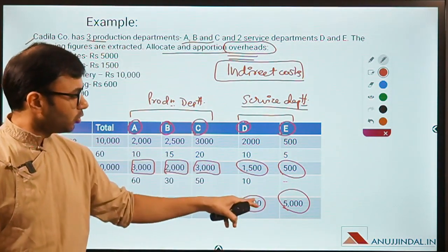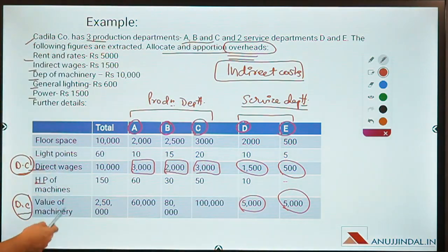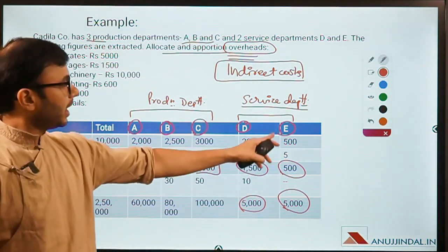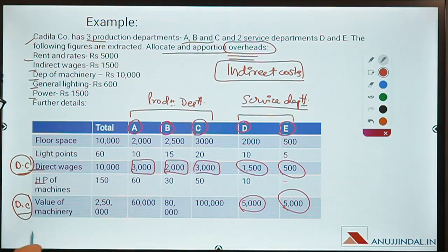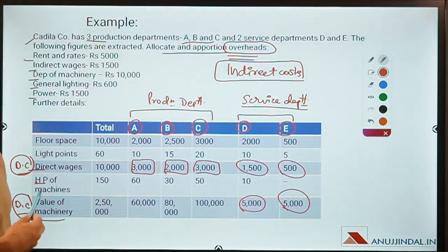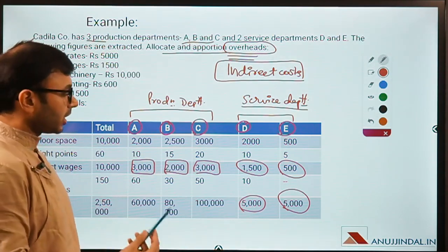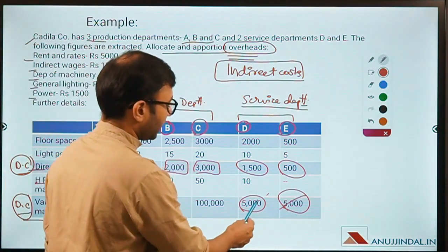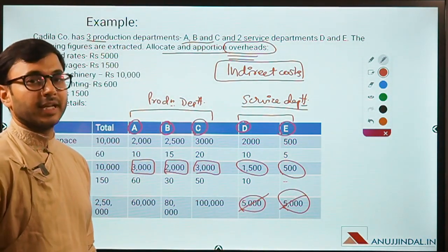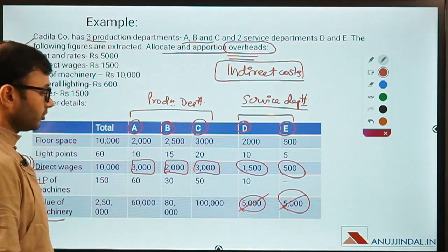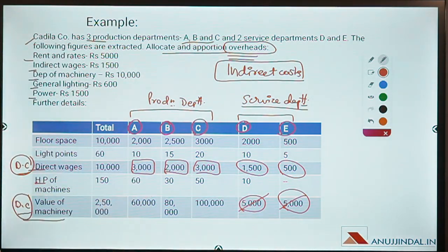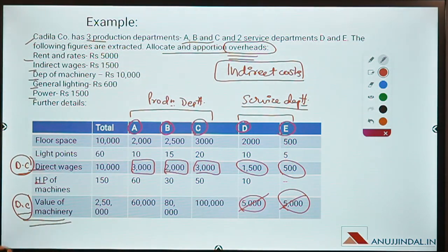These two costs — value of machinery and direct wages — will be allocated in service departments. Value of machinery is an asset; it's a long-term, non-recurring cost, so it is going to be ignored. Now let's come to the answer. How exactly are we going to allocate costs? We have to allocate all these costs to these departments — the total of rupees 5000 was spent on rent and rates.